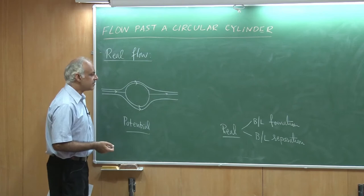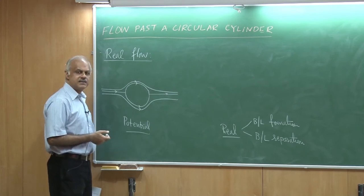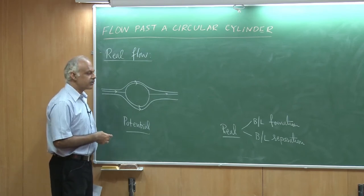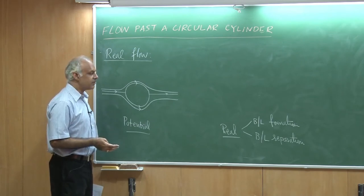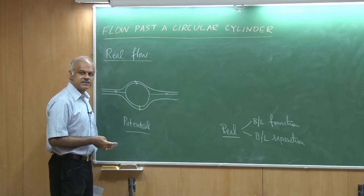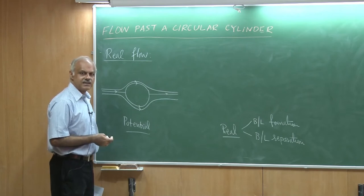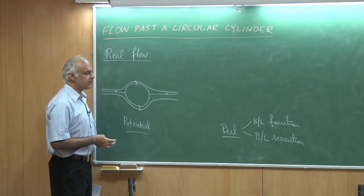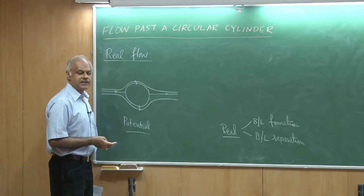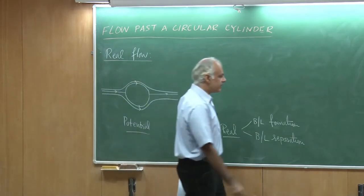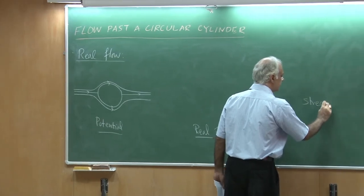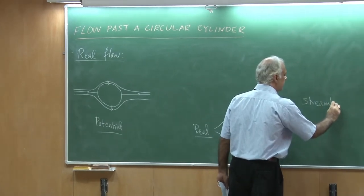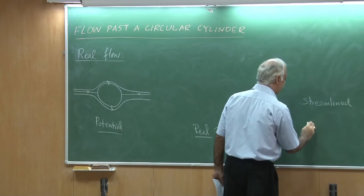If we had a streamlined body, the boundary layer would exist throughout and we would get no flow separation. But if we had a bluff body, for example a circular cylinder, the boundary layer would form and separate. I would also like to talk about streamlined bodies and bluff bodies.